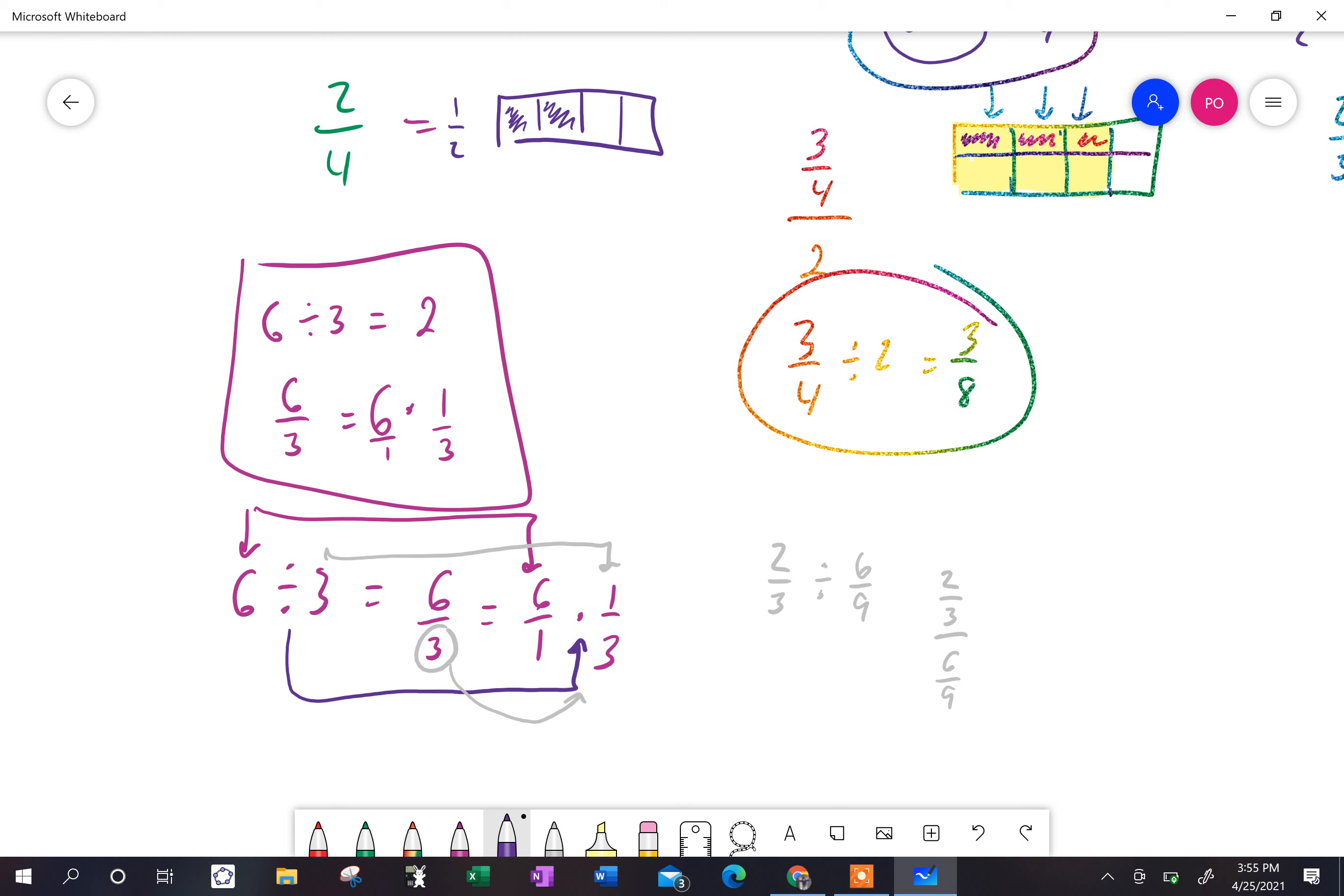Now, this is where it gets a little bit tricky. In order to get rid of this six over nine down here, I need to multiply by the reciprocal, which is nine over six. But I can't just multiply the denominator by nine over six. I have to multiply the numerator by nine over six. And take a look what happens.